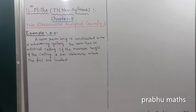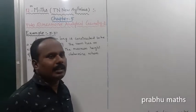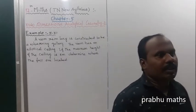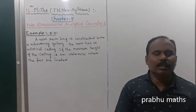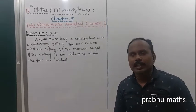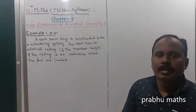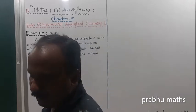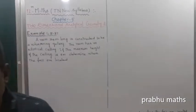What does focus mean? It is C. C is called the focus, and C is equal to the square root of A squared minus B squared.